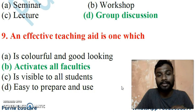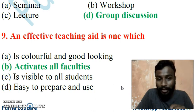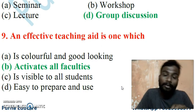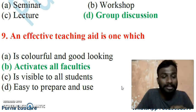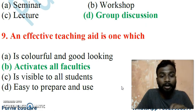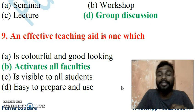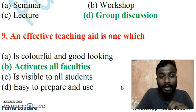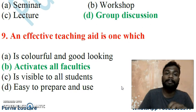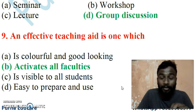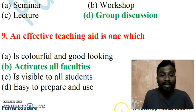Question 9: An effective teaching aid is one which — A) is colorful and good looking, B) activates all the faculties, C) is visible to all students, or D) is easy to prepare. Being colorful and good looking is not relevant to effectiveness. A teaching aid is considered effective when it activates all the faculties. Whenever any technique activates all the faculties, it is considered an effective teaching technique.